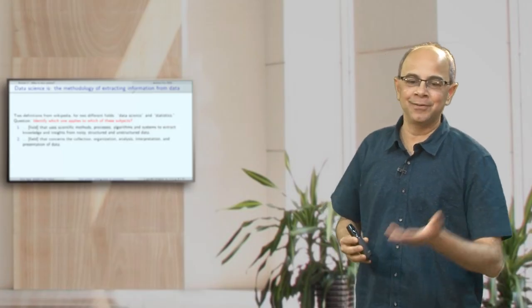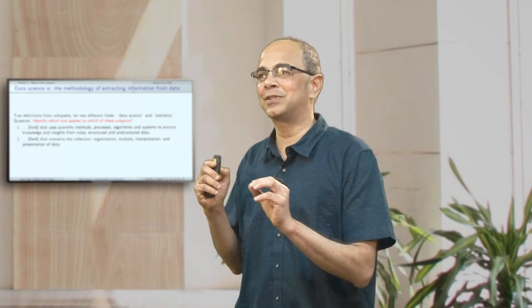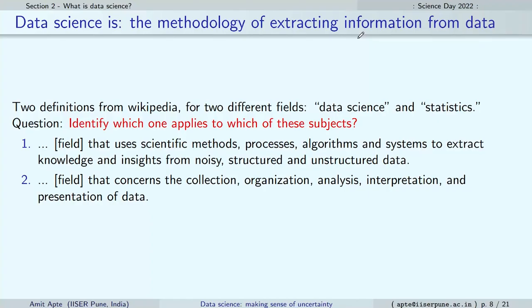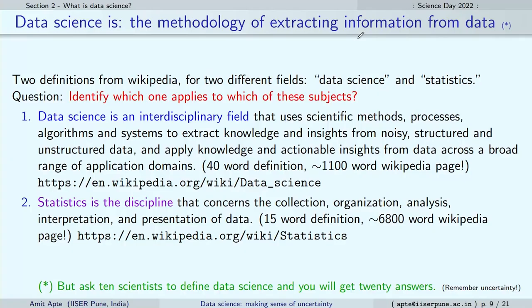If you go to Wikipedia and find out about data science, and then also look up the page for statistics, here are two pieces I copied from Wikipedia. Can you identify which one is which — which is data science and which is statistics? I am not sure. The first was the Wikipedia definition of data science and the second was statistics — very, very similar. Both in a way try to understand what to do with a data set.